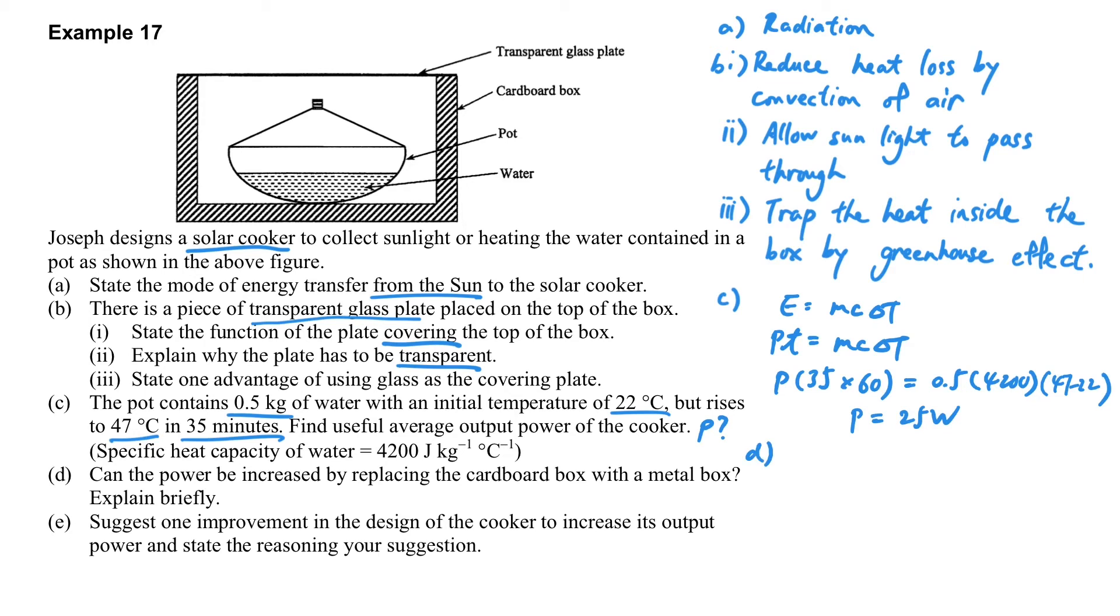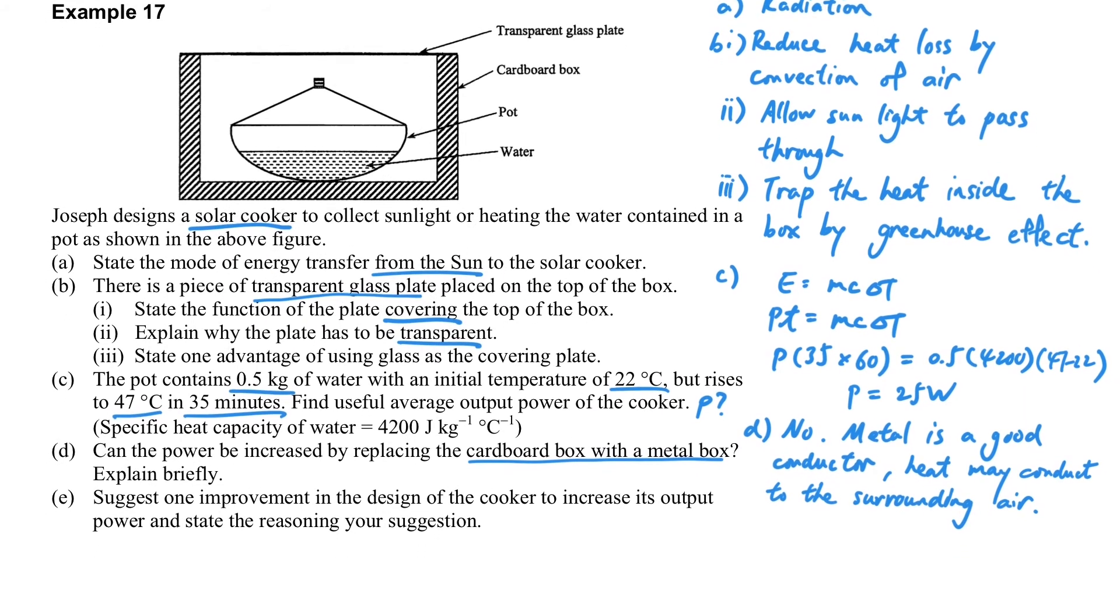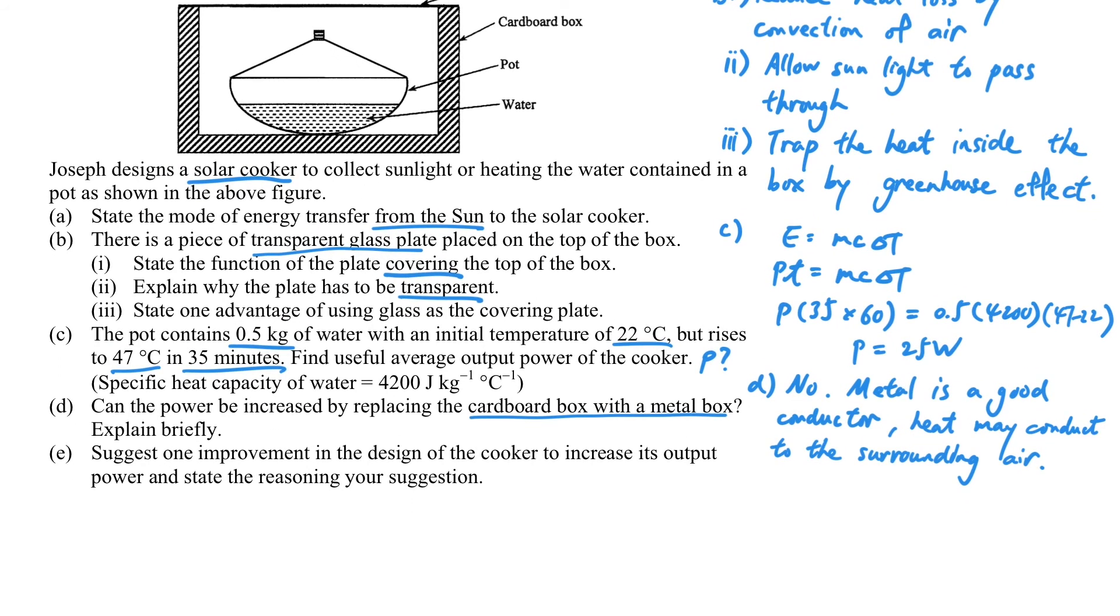Can the power be increased by replacing the cardboard box with a metal box? The answer is no, because the metal is a good conductor of heat. If we use it, the heat will be lost easily to the surrounding air. So it is better to use a good heat insulator to make the box for putting the pot inside.